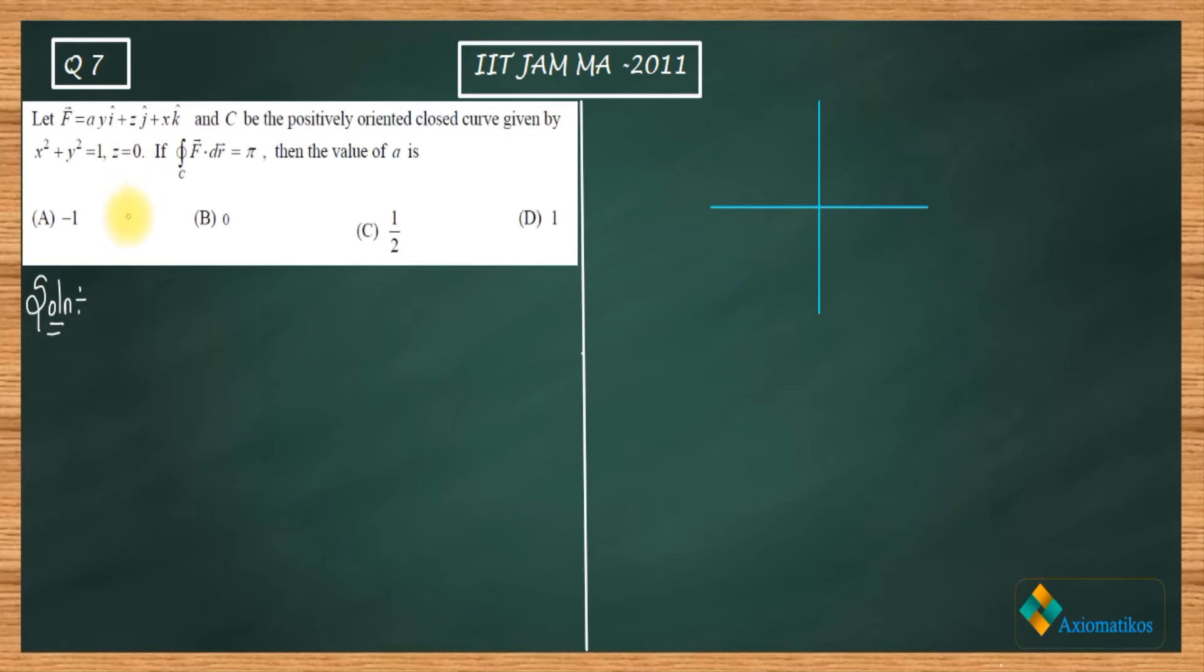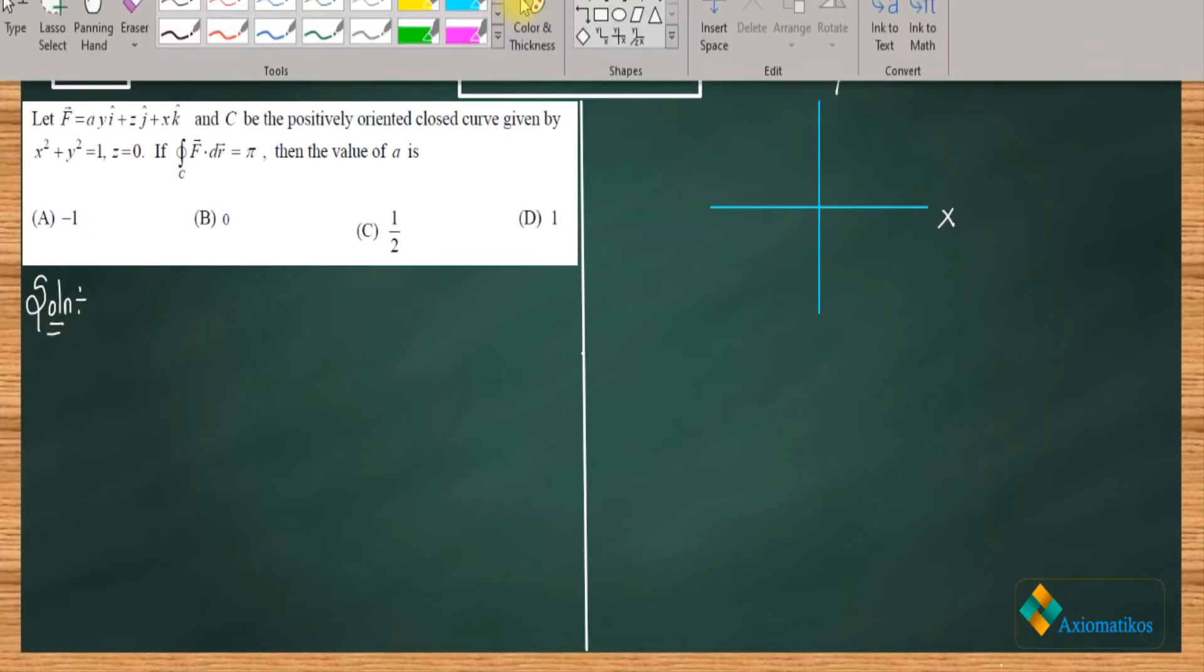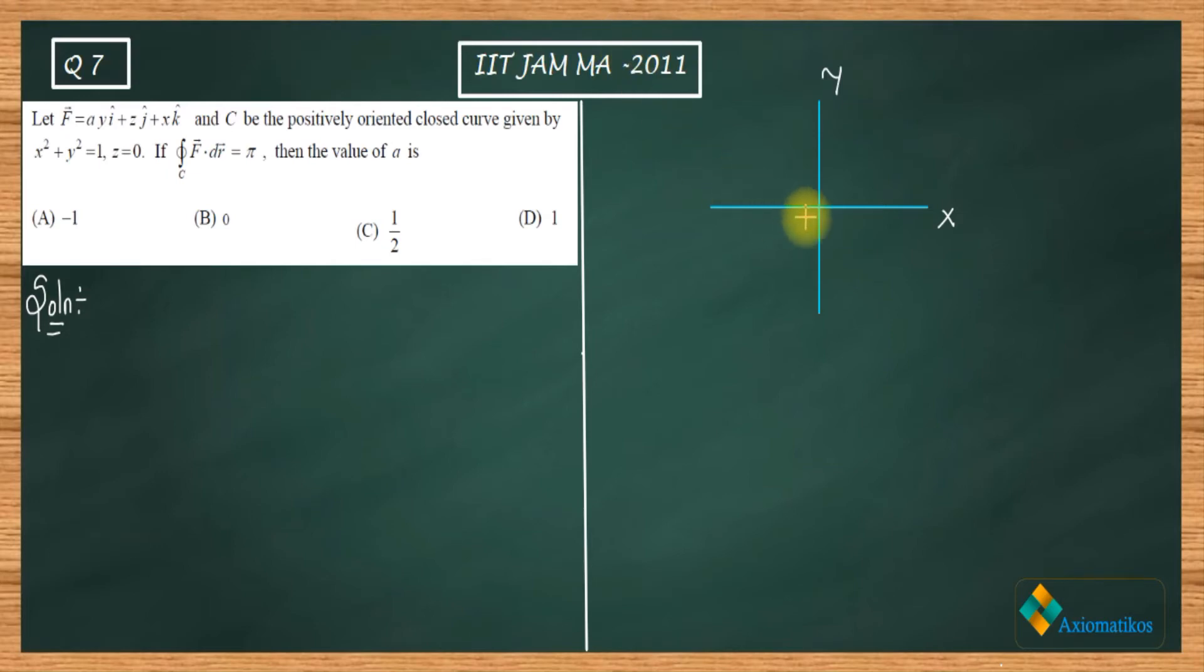So we don't need a third dimension. To draw my path, two dimensions is enough. So let us say this axis is x, this one is y. Now let us draw a circle of radius 1. So x² + y² = 1.